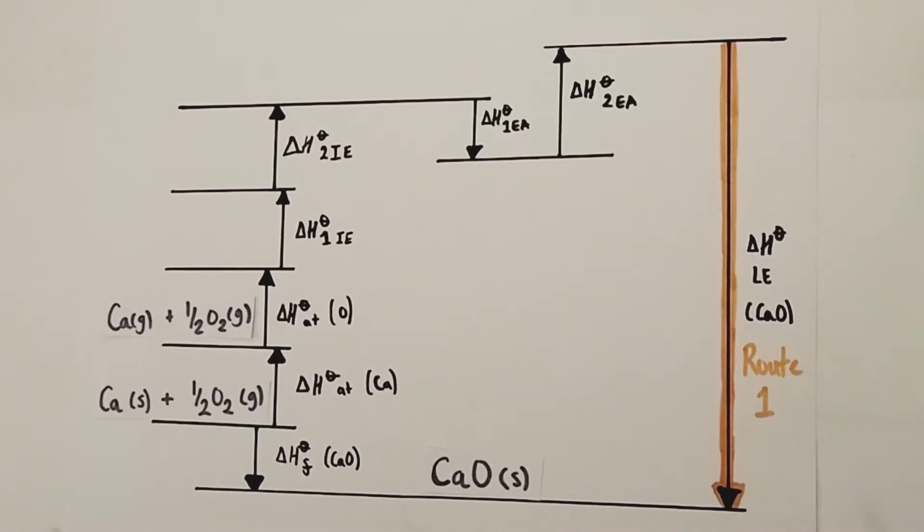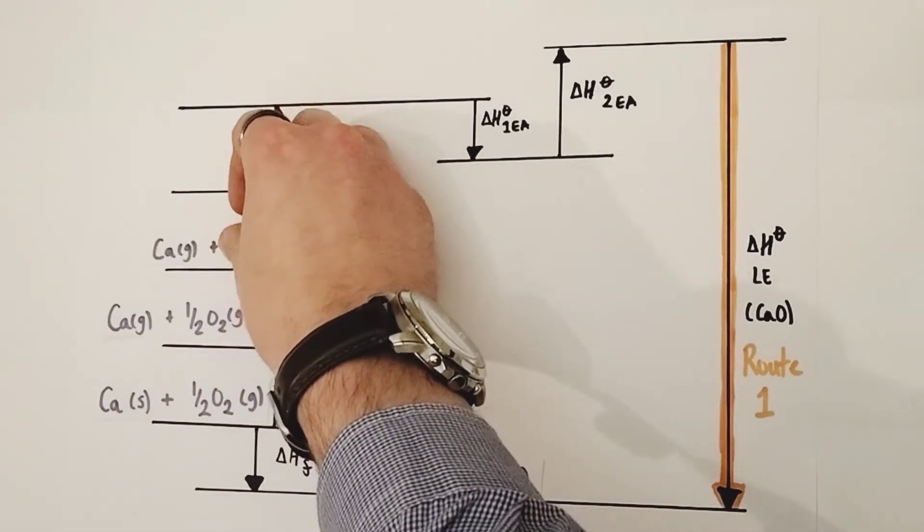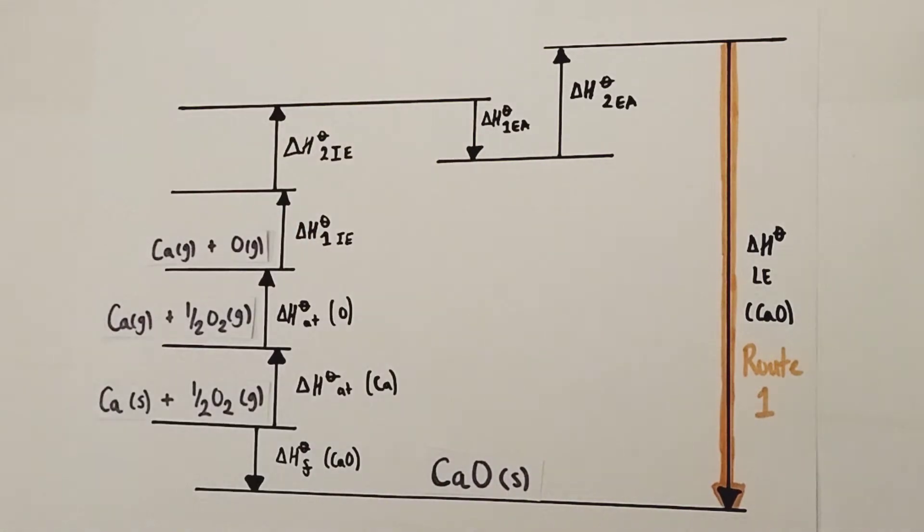Next up is the enthalpy change of atomization of Oxygen. That's just doing the same thing for the oxygen molecules, turning them into gaseous oxygen atoms. So not molecules, but atoms now. So that would be Ca(g) and O(g). So now we have the atoms, not as diatomic molecules, but as singular gaseous atoms.